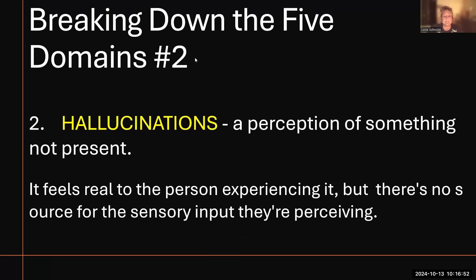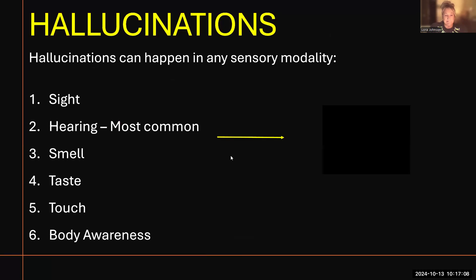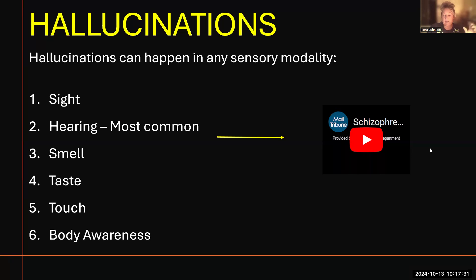Number two on the list was hallucinations — a perception of something not present. It feels real to the person experiencing it, but there's no source for the sensory input they're perceiving. Hallucinations can happen in any sensory modality: sight, hearing, smell, taste, touch, and body awareness. With schizophrenia, auditory hallucinations are the most common. I've inserted a clip here that I'm going to play so you can have an idea of what it might sound like to someone with schizophrenia experiencing auditory hallucinations.